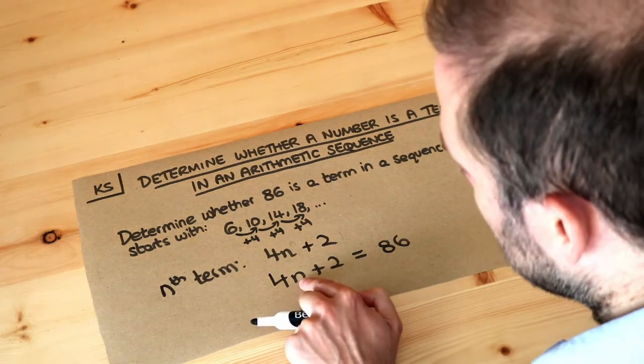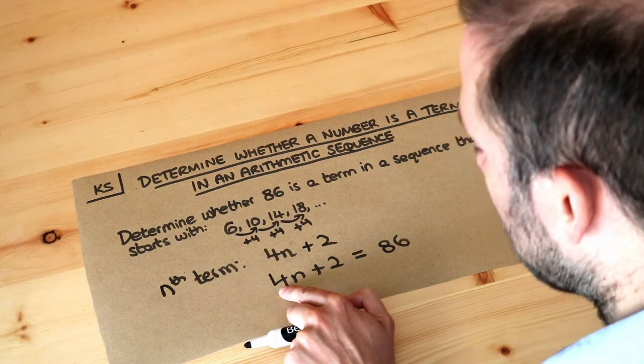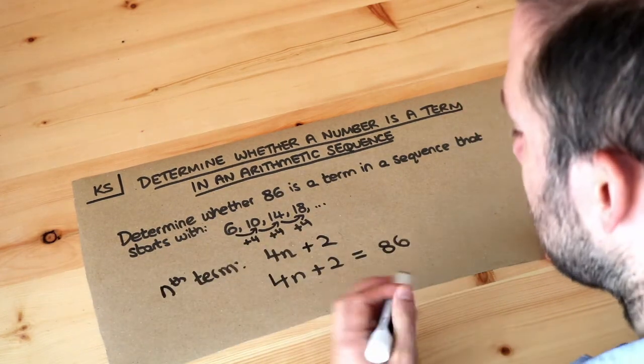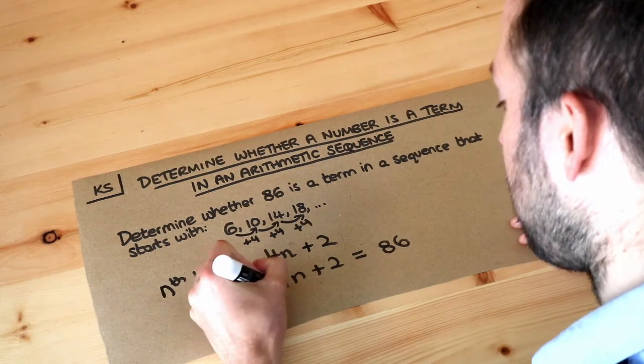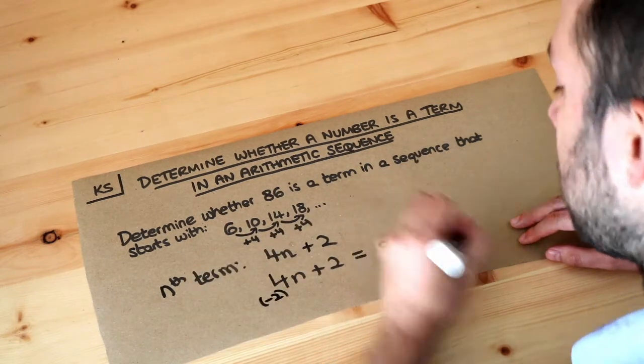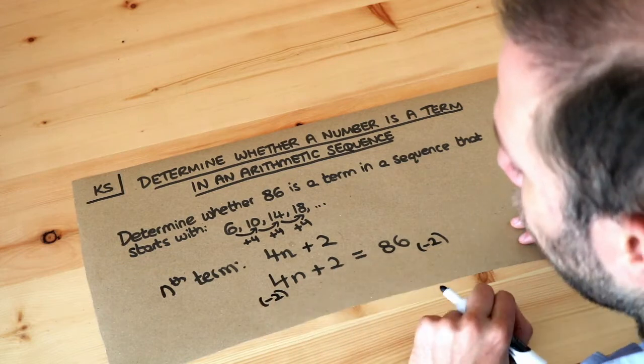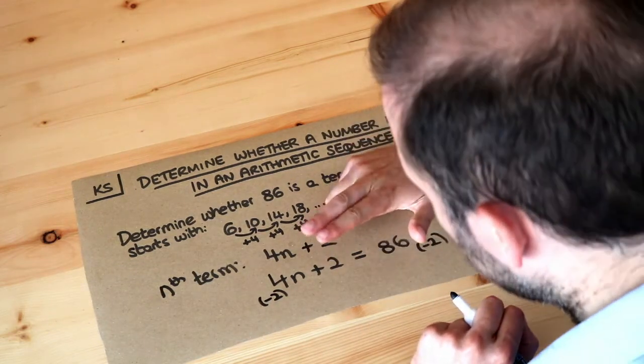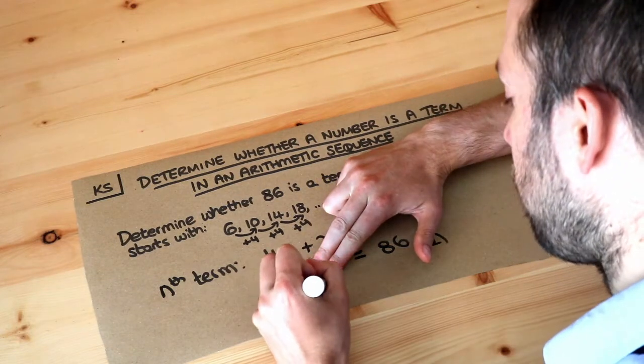Remember we undo the stuff around n. n has been multiplied by 4 then we're adding 2. The last thing we did was add 2, so we want to subtract 2 from both sides to undo that, remembering that subtracting is the opposite of adding. So if we minus 2 from the left hand side that gets rid of the plus 2, leaving just 4n, and if we minus 2 here we get 84.